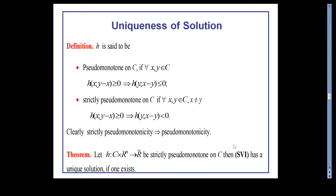For uniqueness of the solution, we need the concept of pseudo-monotonicity. A bifunction h is said to be pseudo-monotone on C if h(x, y − x) ≥ 0 implies h(y, x − y) ≤ 0. It is strictly pseudo-monotone if h(x, y − x) ≥ 0 implies h(y, x − y) < 0 strictly. Every strictly pseudo-monotone function is pseudo-monotone. If, in addition to the existence conditions, h is strictly pseudo-monotone, then the bifunction VIP will possess a unique solution.